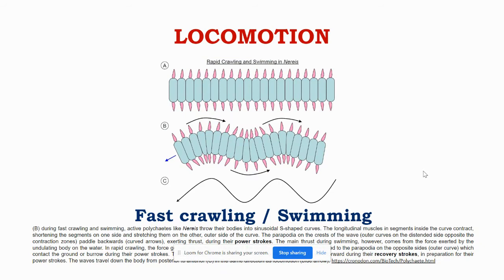During fast crawling, body undulations are produced by waves of contractions in the longitudinal muscles of the body in coordination with parapodial activity, and as a result the worm is able to crawl and swim rapidly. During swimming, particularly in the heteronereis phase, swimming takes place with the help of vigorous lateral undulating body movements and paddle-like parapodial movements with the help of oar-like chaetae.